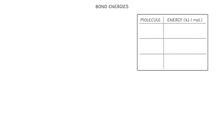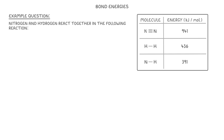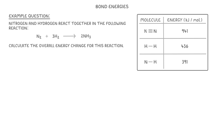Before we finish, let's try one more example. Nitrogen and hydrogen react together in the following reaction, and the bond energies for these molecules are shown in the table. Calculate the overall energy change for this reaction. Although you don't have to, I think it's definitely easier if the first thing you do is draw out all the molecules using their displayed formula, so that you can actually see the bonds.